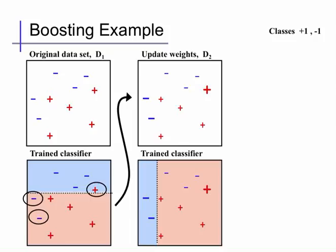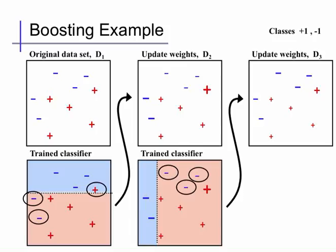Again, we identify the data points where we've made a mistake and increase their weight for the next round, decreasing the weights of the ones we get right. Since we got these points correct, their weight has gone down. Since we got these pluses correct, their weight has gone down even further. And these points, which got smaller in the first step, have now gotten larger again. We now train another model of the same simple type to predict these weighted data points with low weighted error.